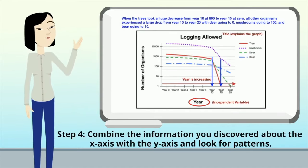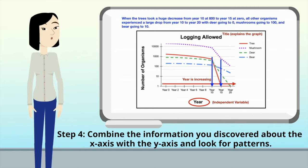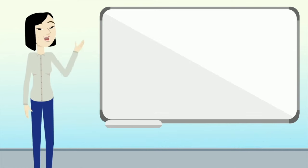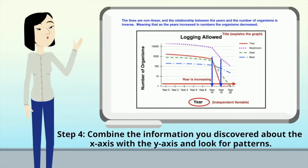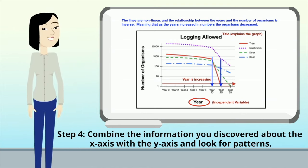In step four, we combine the information from the x-axis and the y-axis and look for patterns. When the trees took a huge decrease from year 10 at 800 to year 15 at zero, all other organisms experienced a large drop from year 10 to year 20 — deer going to zero, mushrooms going to 100, and bears going to 10. The lines are non-linear and the relationship between the years and the number of organisms is inverse, meaning that as the years increased, the number of organisms decreased.